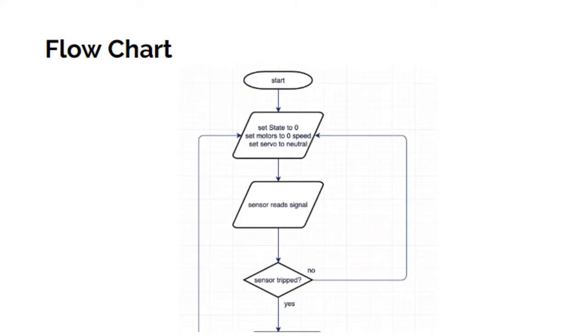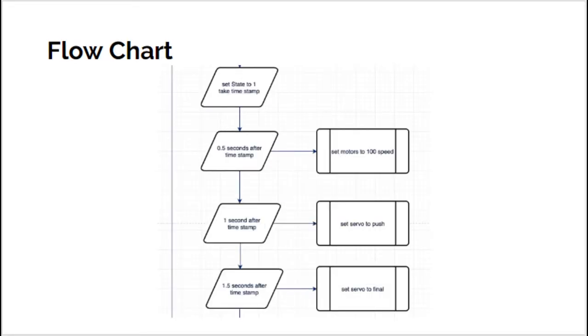This is the logical flowchart of our prototype. As you can see, after it starts, the state is set to 0, with the motors and servo set to 0 speed and neutral angle. A sensor begins to read for signals, and if it's not tripped, then it continues to have the state at 0 with motors and servo at 0 and neutral angle. But once the sensor is tripped, the state is set to 1, and a timestamp is taken.